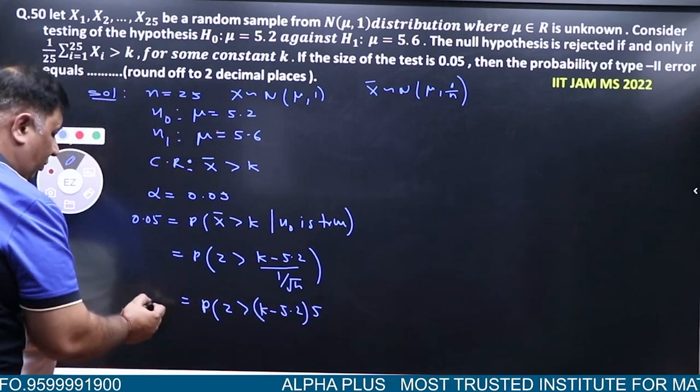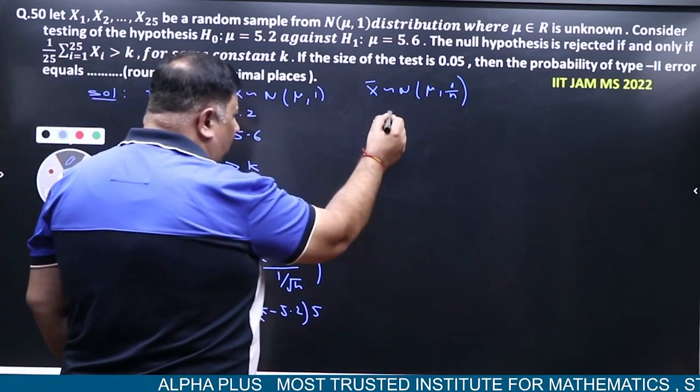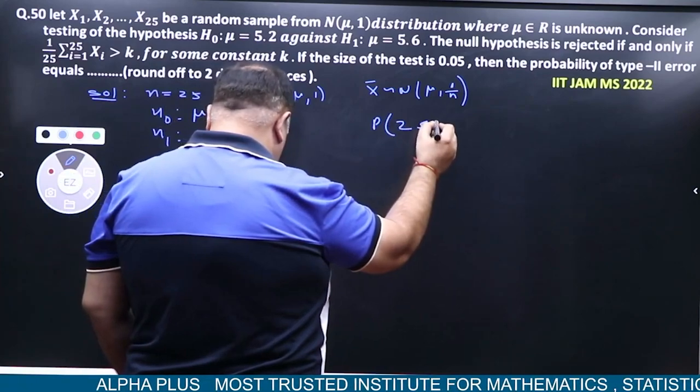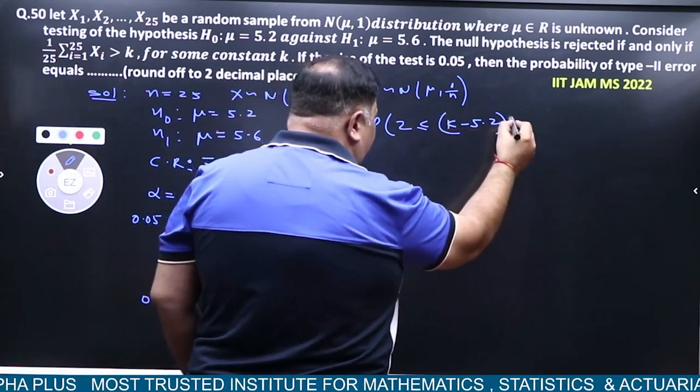This equals 0.05. P(Z ≤ (K-5.2)×5) = 0.95.